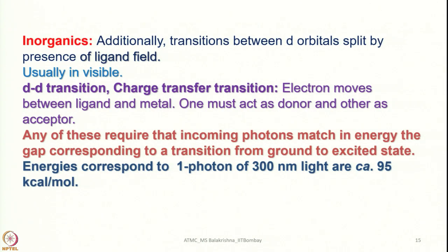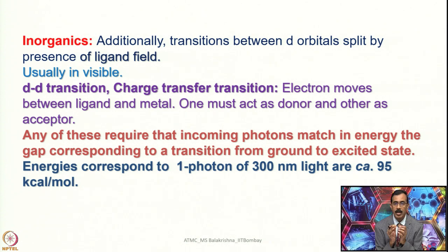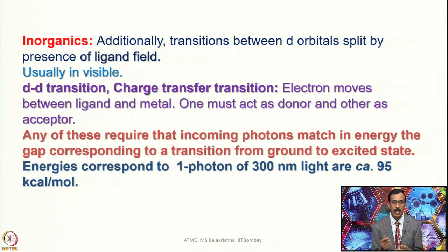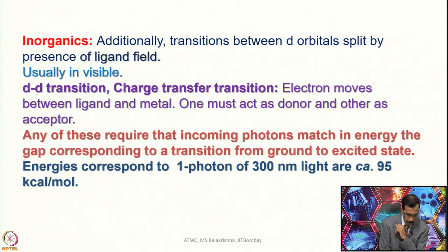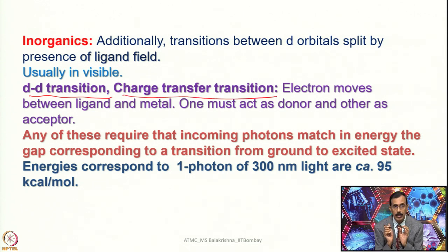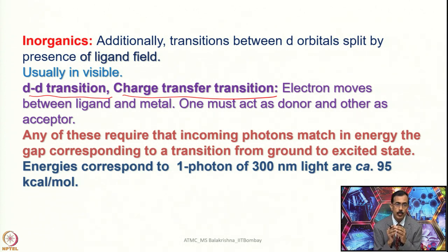In inorganic chemistry, additionally there are transitions between d orbitals split by the presence of the ligand field, as seen in ligand field theory. Besides σ→σ*, π→π*, and n→π* transitions, in metal complexes we also come across d-d transitions, which usually occur in the visible region. Additionally, in metal complexes we encounter charge transfer transitions: metal-to-ligand charge transfer (MLCT), ligand-to-metal charge transfer (LMCT), and, in bimetallic systems, metal-to-metal charge transfer (MMCT).